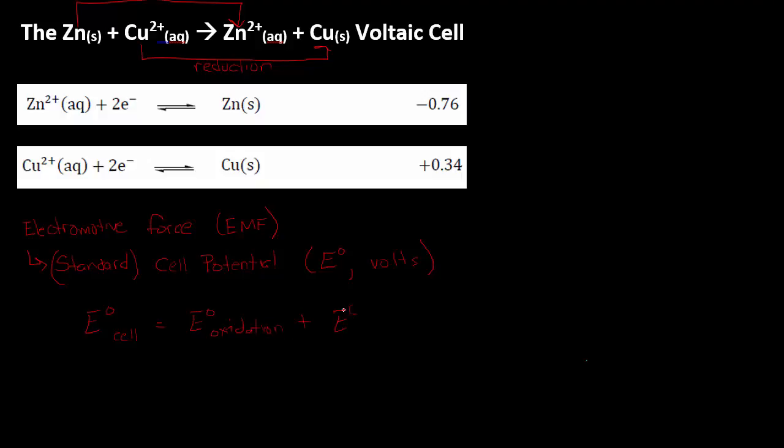In order to determine from literature values the potential a voltaic cell could generate, we use this formula: we add the cell potential of the oxidation half cell to that of the reduction. You'll notice that the oxidation of zinc, which we know occurs, isn't listed in the table, so we need to find the reduction line and reverse it.